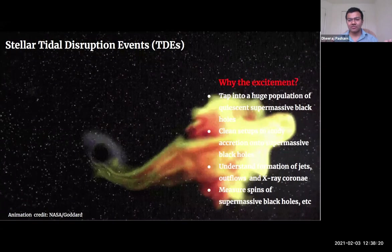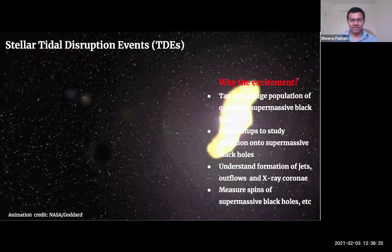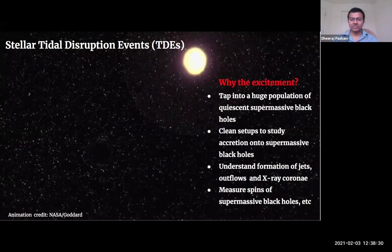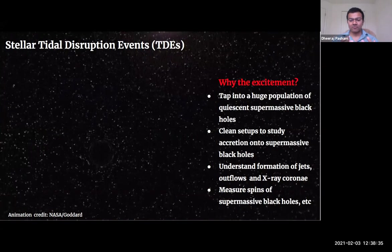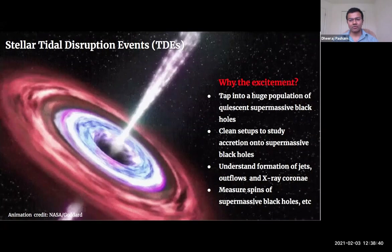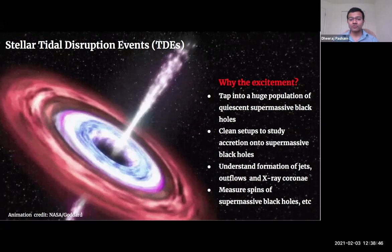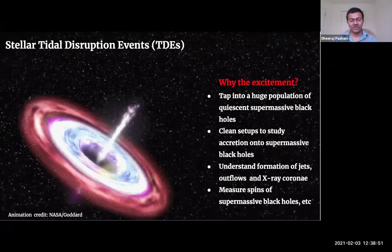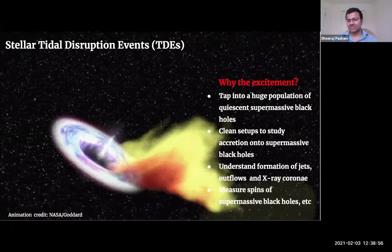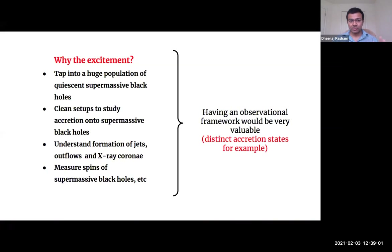TDEs allow us to do a clean study of accretion without any pre-existing structures, like in the case of AGN. Some TDEs also launch jets, disk outflows, and can form X-ray corona — all energetically important physical entities around black holes that need further investigation. We can also use TDEs to measure spins of supermassive black holes, which I'll briefly talk about at the end.